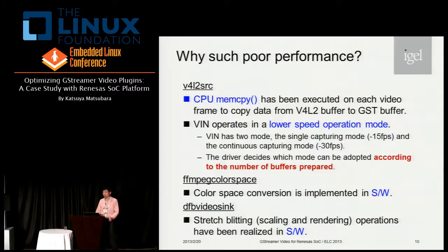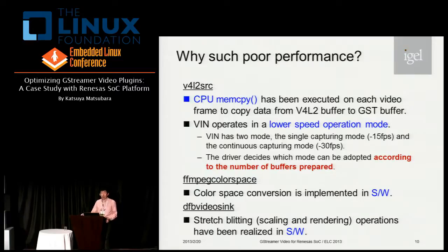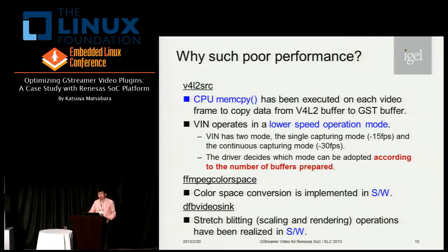Why is performance so poor? I found these limiting factors for performance degradation. First, in the current pipeline, V4L2 source invokes CPU memcopy on each video frame to copy from V4L2 buffer to GStreamer buffer. Additionally, the VIN device operates in a low-speed mode — VIN has two operation modes: single capturing and continuous capturing — and the kernel driver decides which mode to use according to the number of buffers prepared. So V4L2 source does not prepare enough buffers for VIN. FFMPEG color space is implemented in software, so in a low-spec embedded platform this must be overhead. Furthermore, the stretch-blitting operation in DFB video sink has been realized by the DirectFB software renderer.